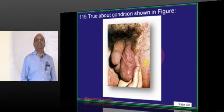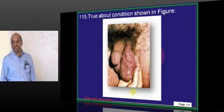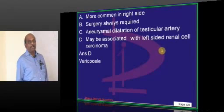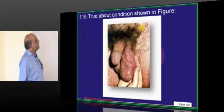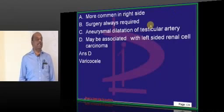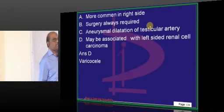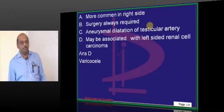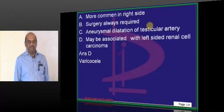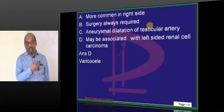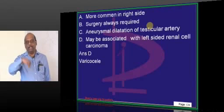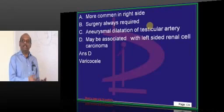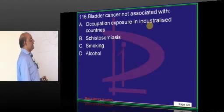What you are seeing is a varicocele with a bag-of-worms appearance. It can be associated with left-sided renal cell carcinoma. Especially if it is drastically developing, you should suspect renal cell carcinoma — the right-sided spermatic veins drain directly into the IVC, while the left side drains into the renal vein, which takes a 90-degree angle into the IVC. So a rapidly developing left varicocele means you should suspect renal cell carcinoma.